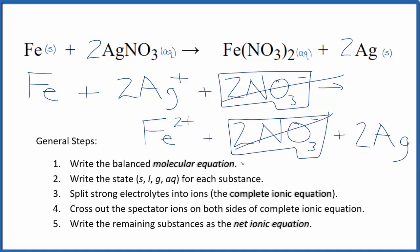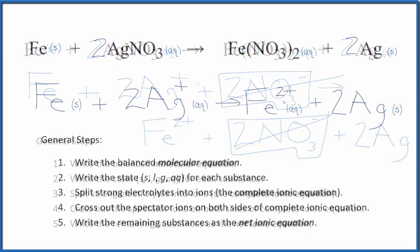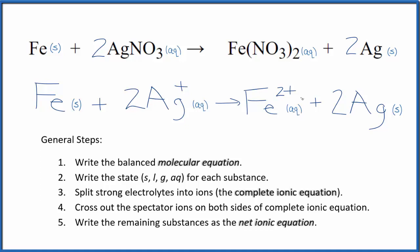But everything else is unique. So this is the net ionic equation for Fe plus AgNO3. Let's clean it up, write the states. We'll have our net ionic equation. So this is our net ionic equation for iron plus silver nitrate.